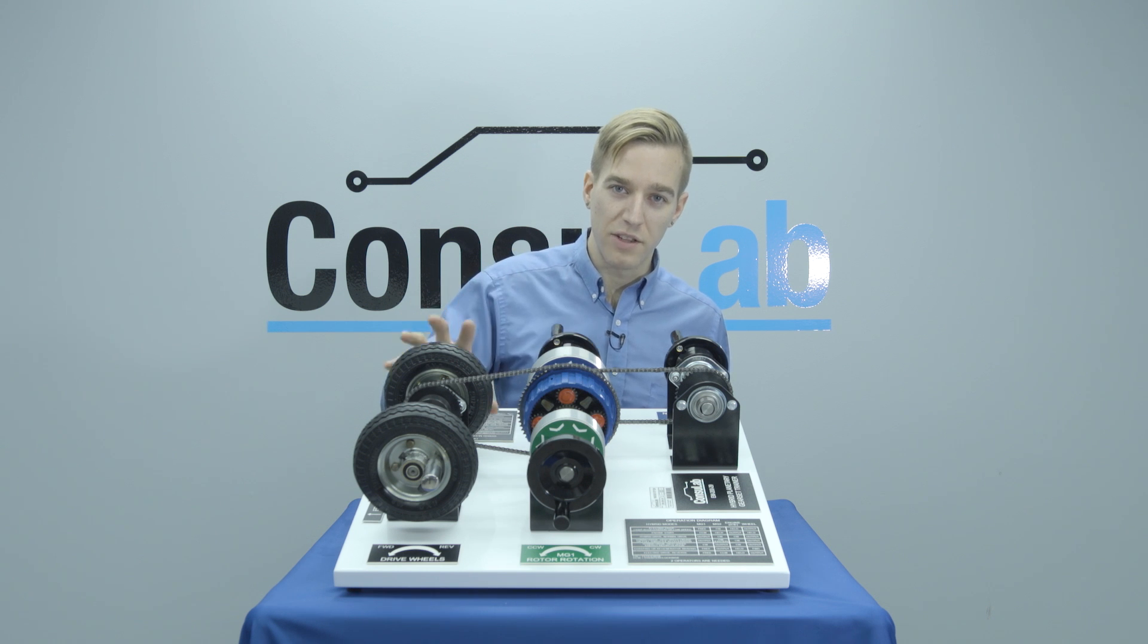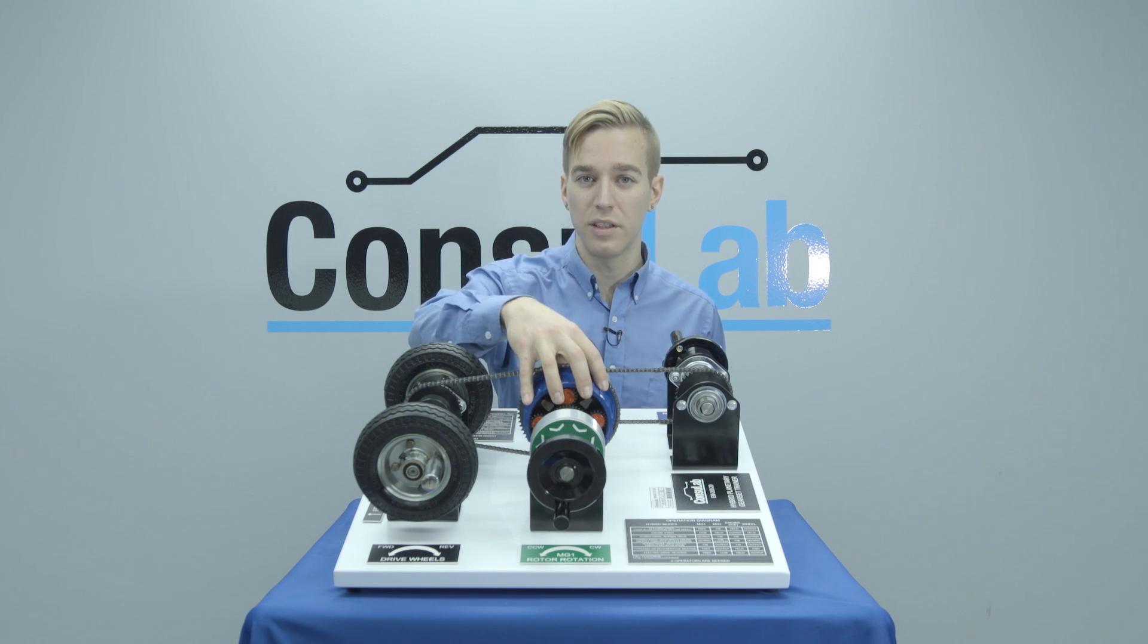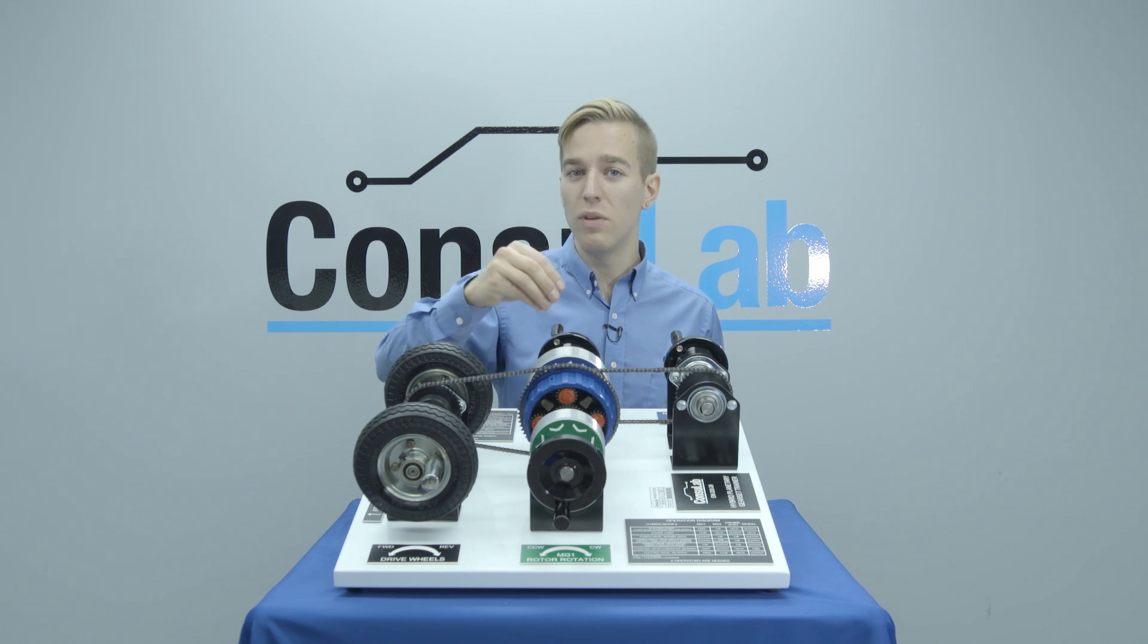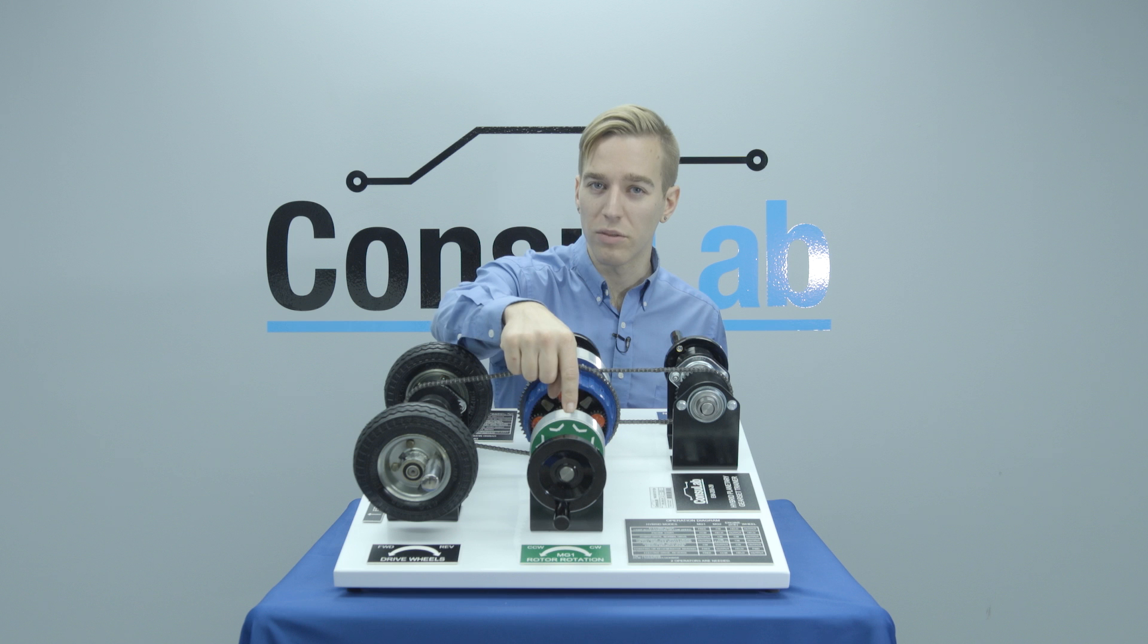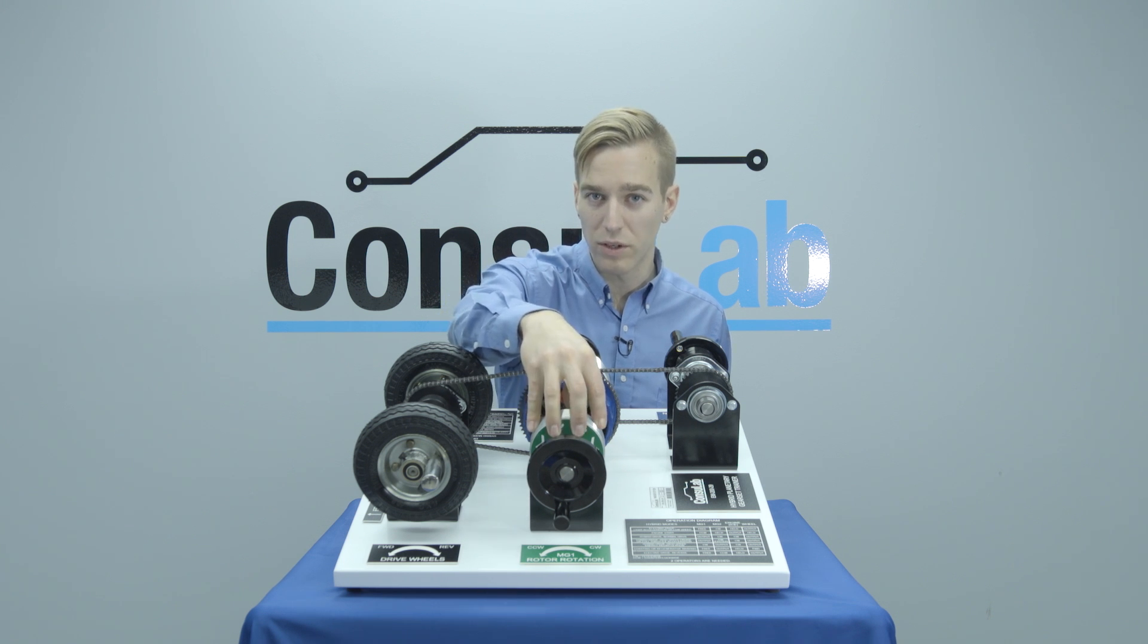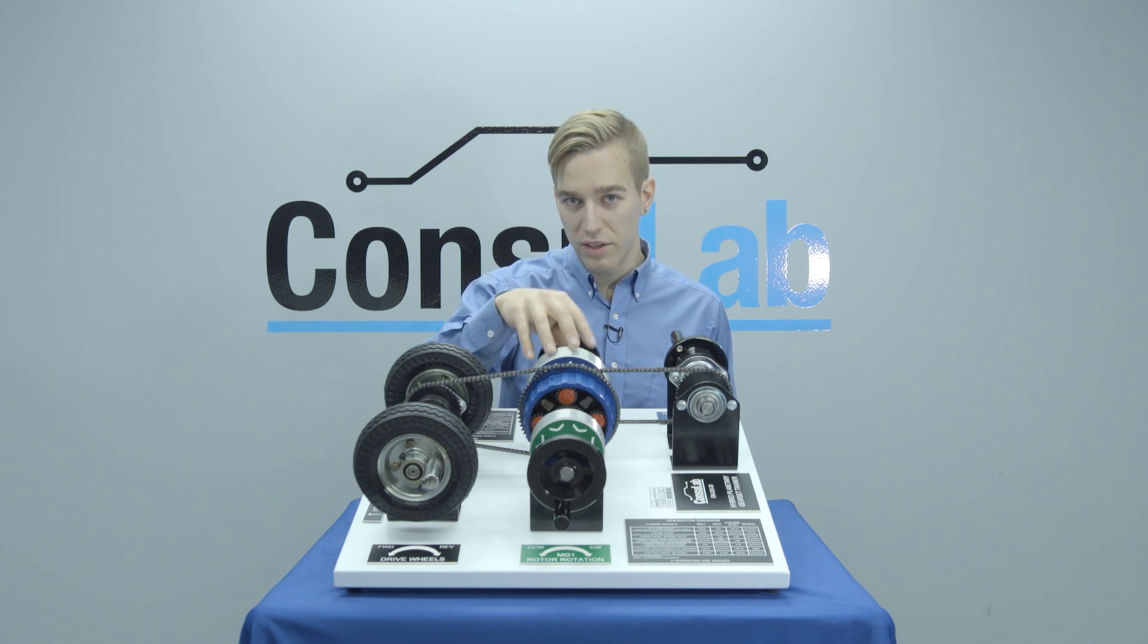Between the internal combustion engine and the drive wheels however is very different than on a regular car because we now have what's called a power split device and then we have two electric motors. We have one here that's called Motor Generator 1, it's a smaller one, and then we have the second one which is called Motor Generator 2.